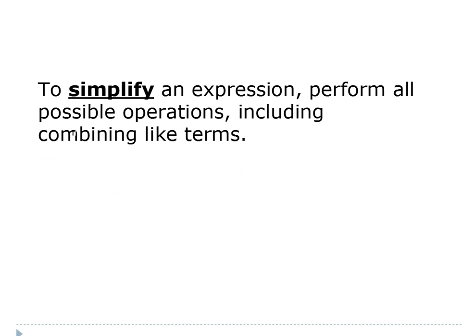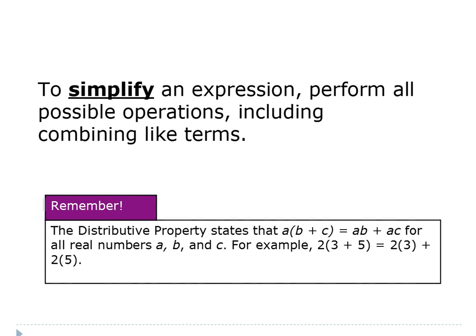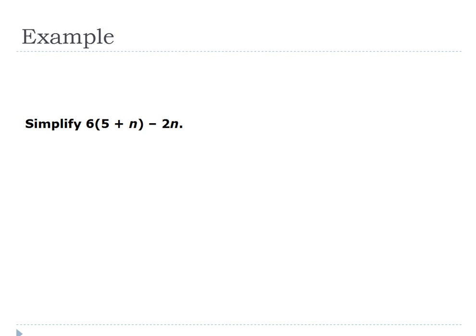To simplify an expression means to do all the operations, including combining like terms. Now we're going to use the distributive property to combine like terms. In hands-on equations we've seen how the distributive property works. Some of us can go ahead and just use the distributive property; some might need to separate it out and then combine it back together. For our purposes we'll use the shortcut way, but if you need to, please write it out the long way. Put your pencils down.